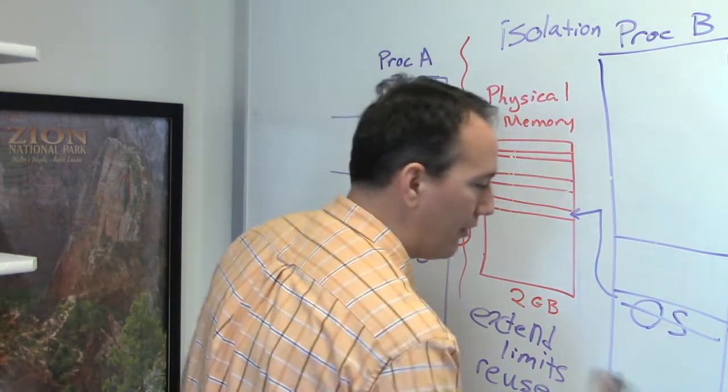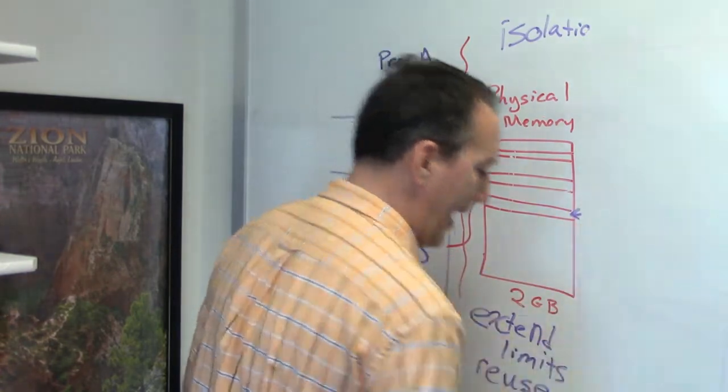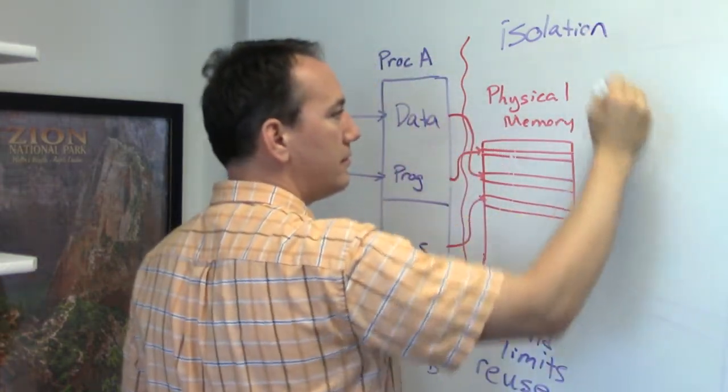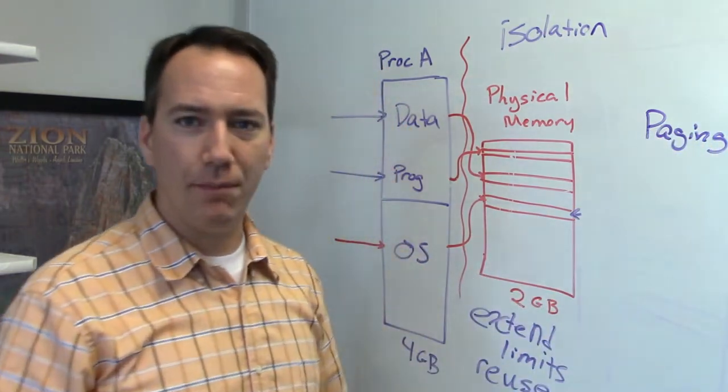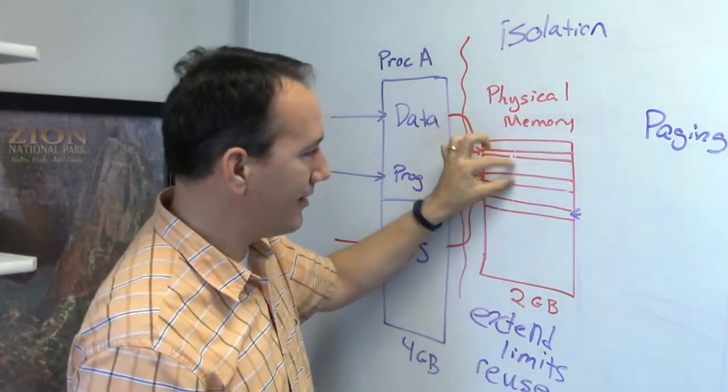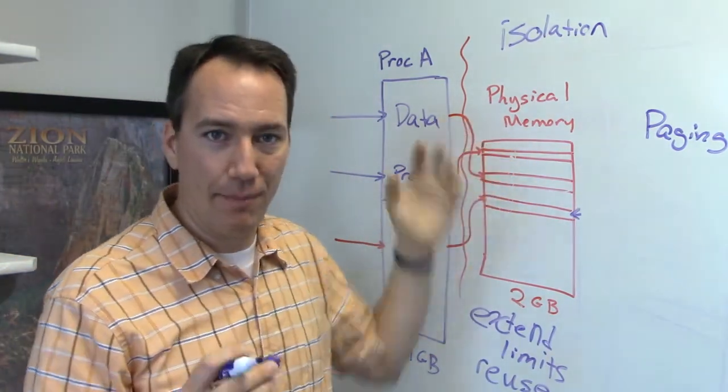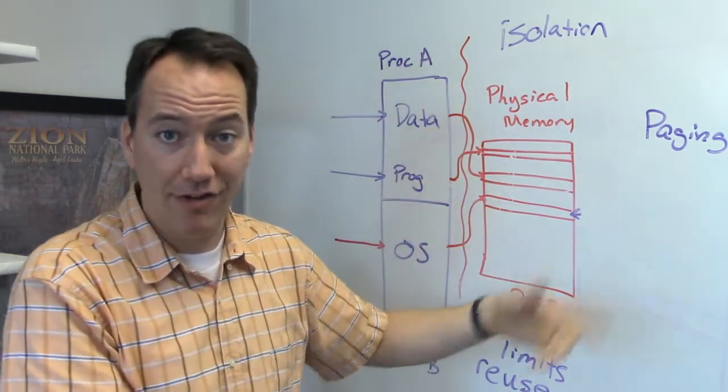There's one more concept that you should know about in terms of virtual memory, and that is called paging. And the reason why it's called paging is because the memory is actually organized into pages. Each one of these tiny little rectangles I've drawn is a page of memory. You can think of memory as a big book and we're just reading a page at a time.